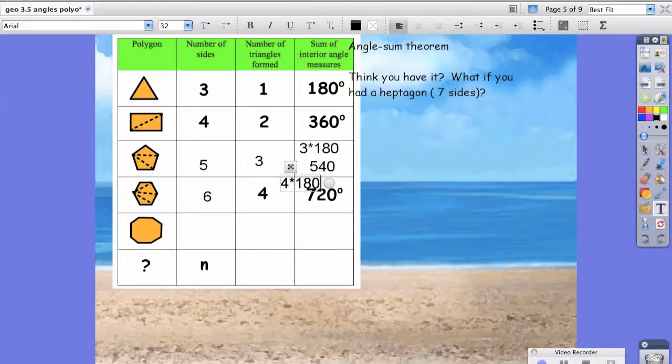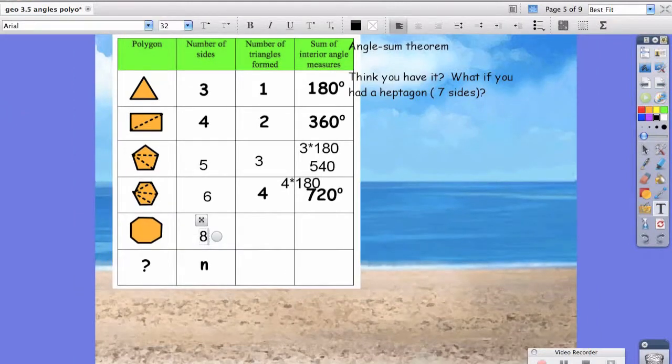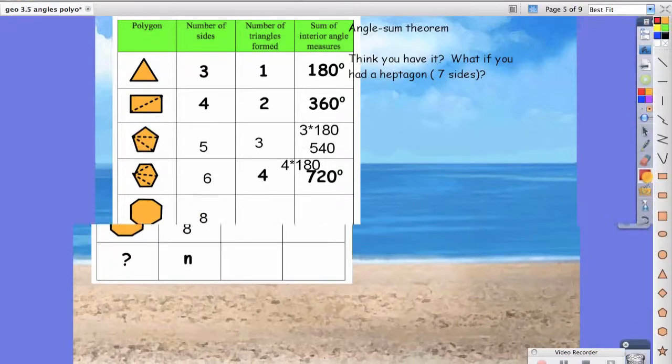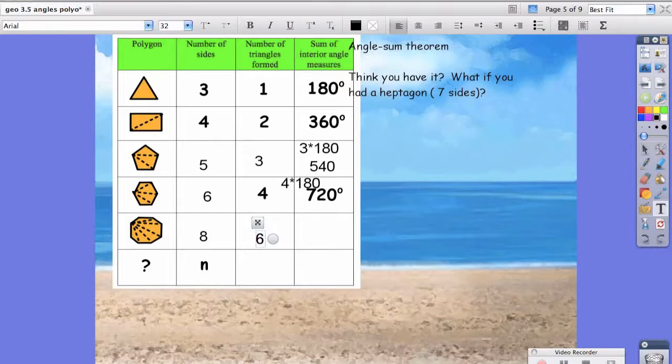As we continue to do this last one, think about how the number of sides relates to the number of triangles, and how the number of triangles relates to the sum of interior angles. For this octagon, we have eight sides. Let's draw our lines first. We have one, two, three, four, five, six triangles. So are you noticing a pattern?